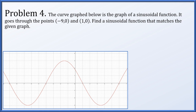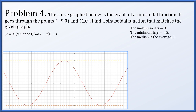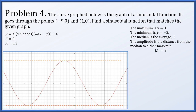In problem four, we're given the graph of a sinusoidal function. It goes through the points negative 9, 0 and 1, 0, and we need to find a function that matches the given graph. We're looking for a times either a sine or a cosine of omega times the quantity x minus phi plus c. The maximum value is y equals 3, the minimum is negative 3, which means the median is 0, so c must be 0. The amplitude is the distance from the median to either the max or min, which is 3. So the absolute value of a is 3, meaning a is either plus or minus 3.